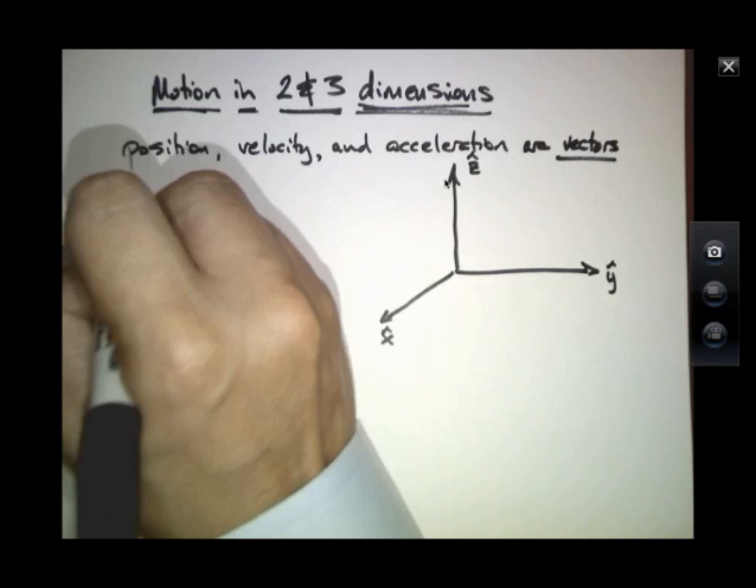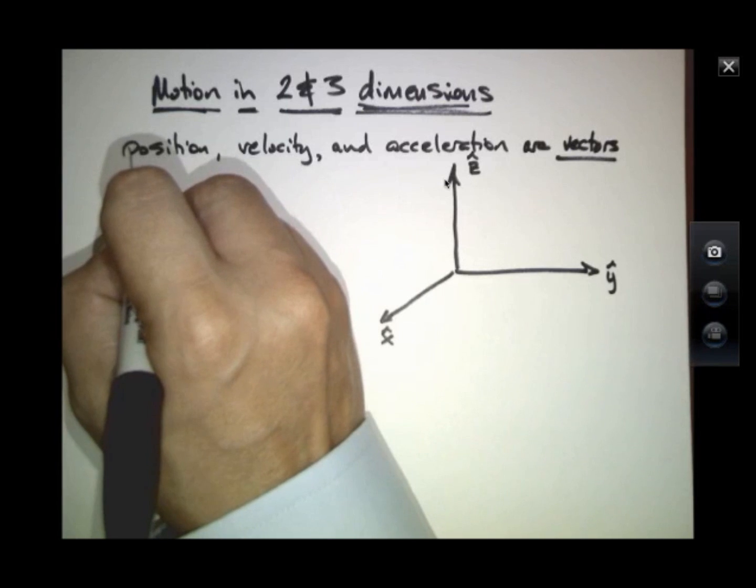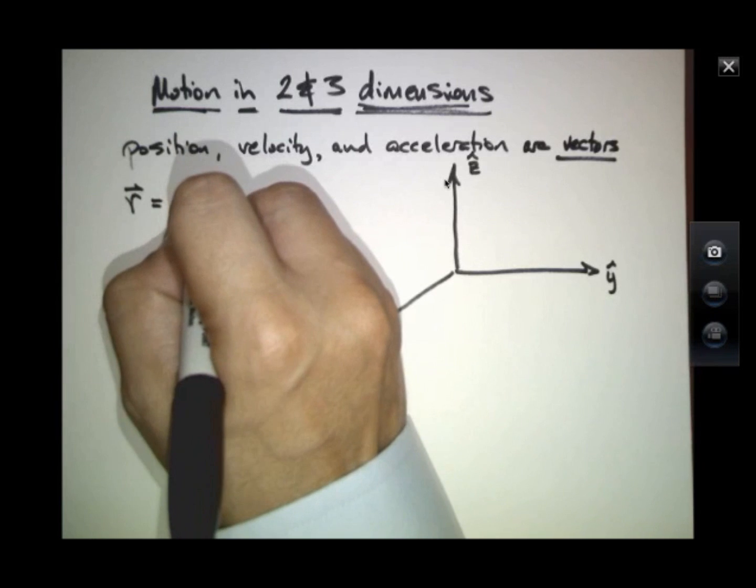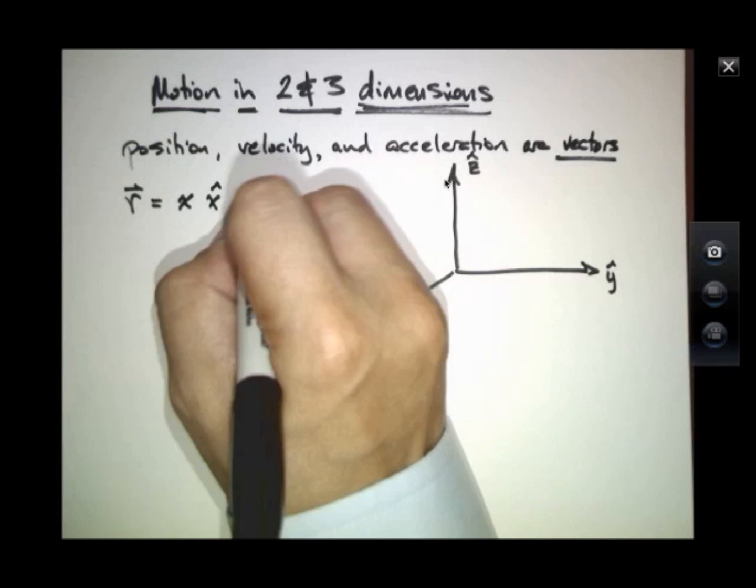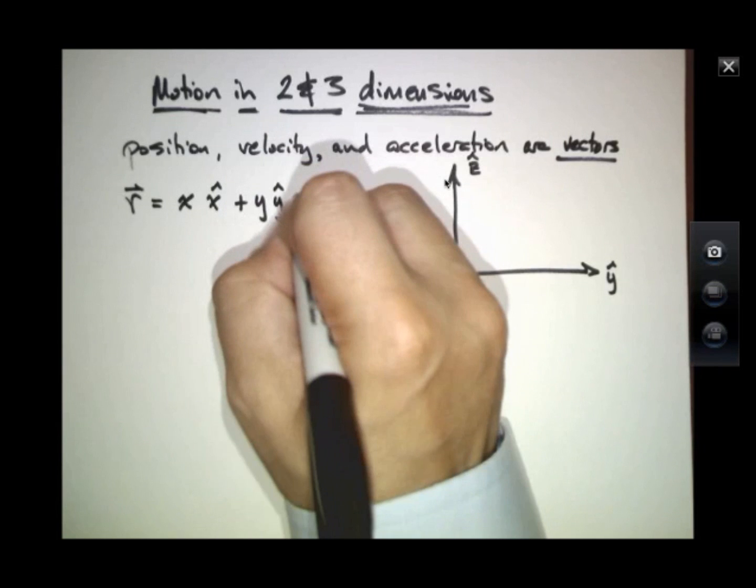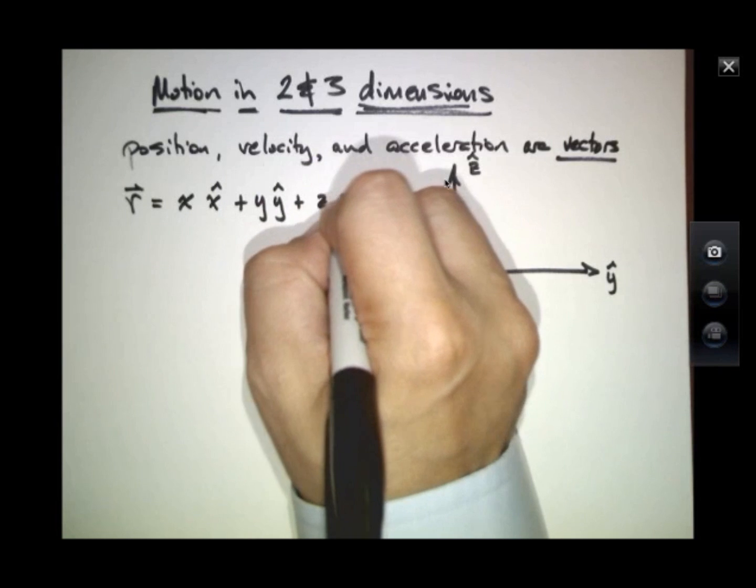A position R is some quantity x times x-hat plus y times y-hat plus z times z-hat.